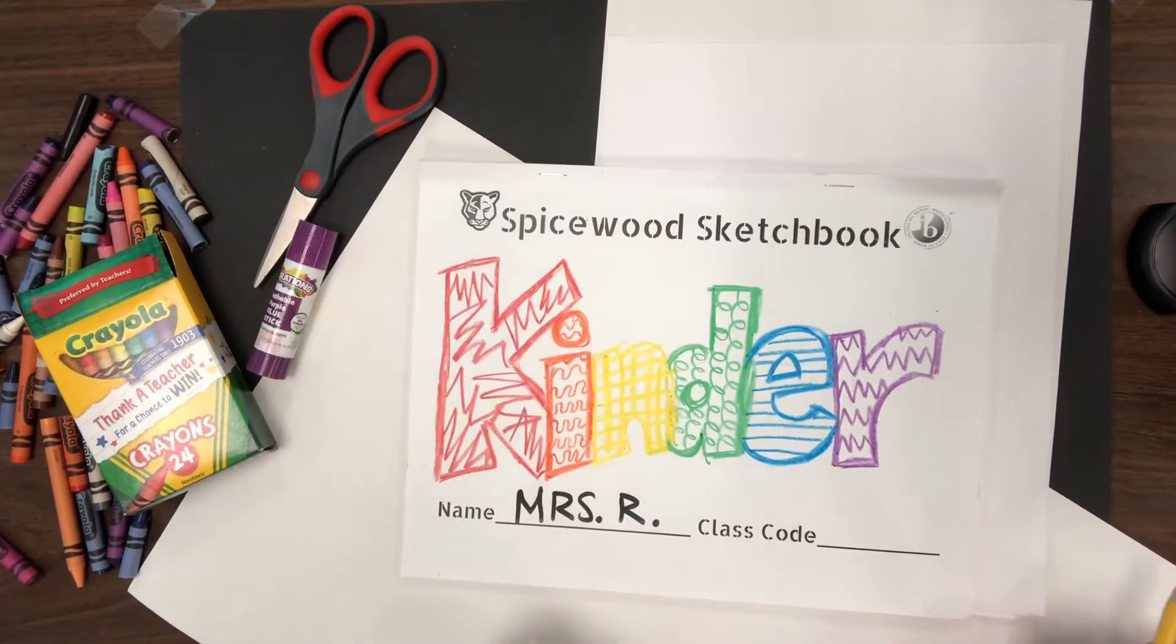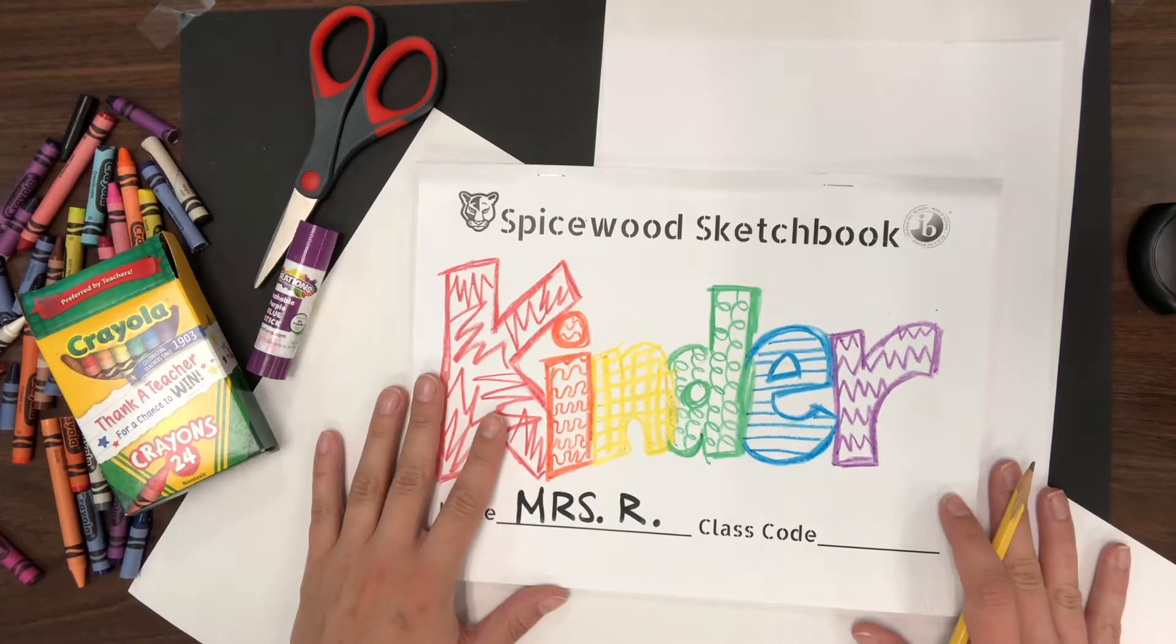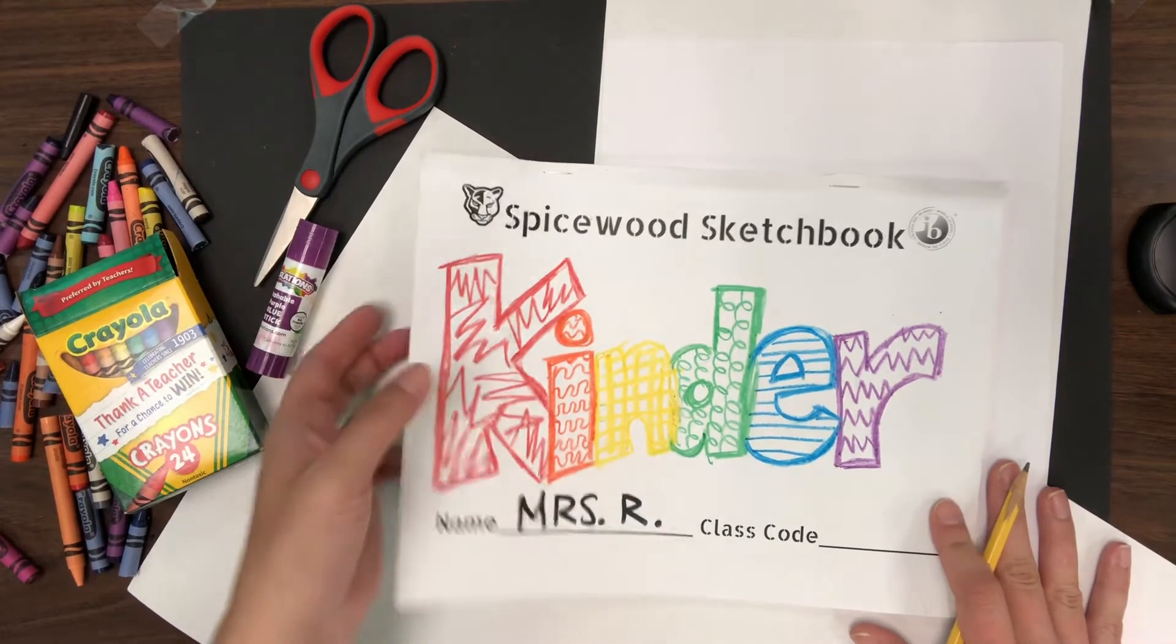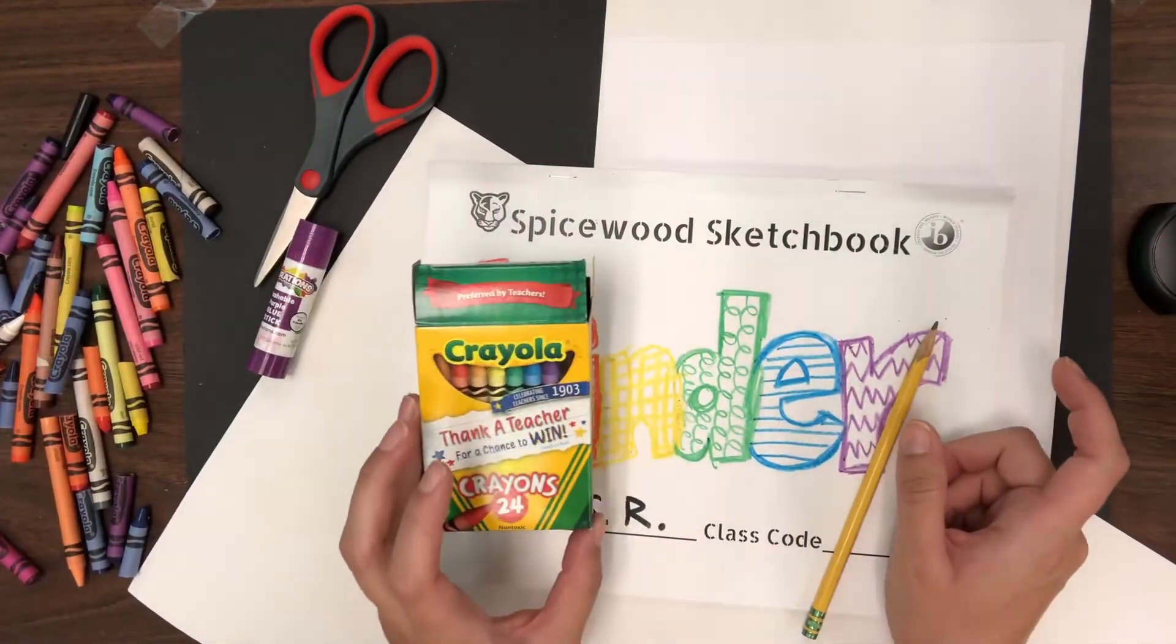Hi kindergarten kiddos, it's Miss Rae Bourne. Before we get started, you have some things to gather. You need your sketchbook like you normally would, a pencil, and you'll definitely want some crayons or markers.